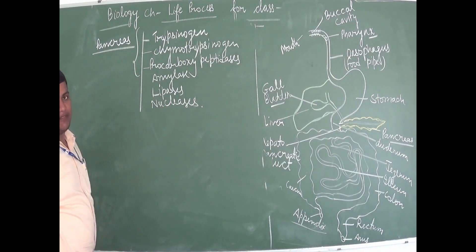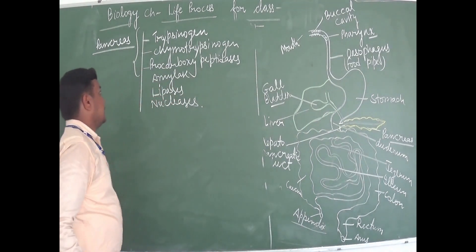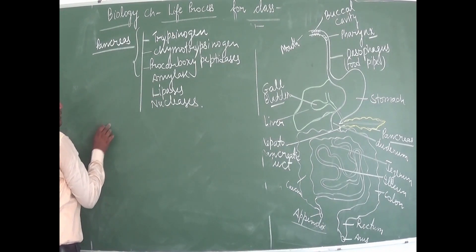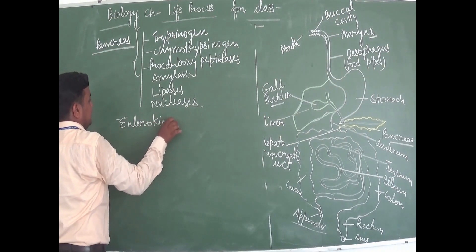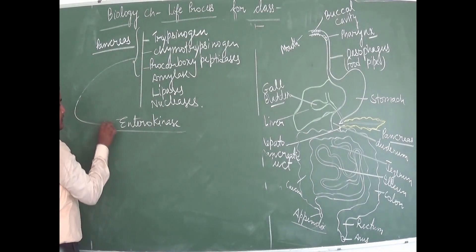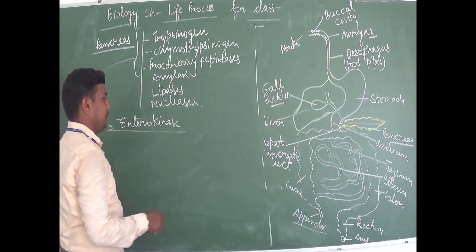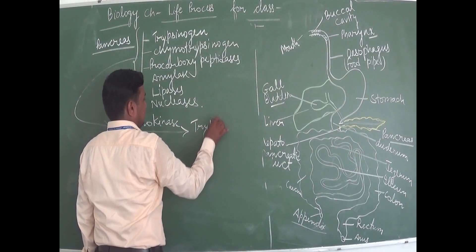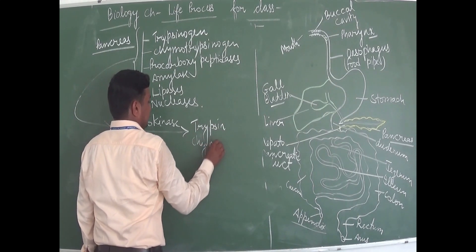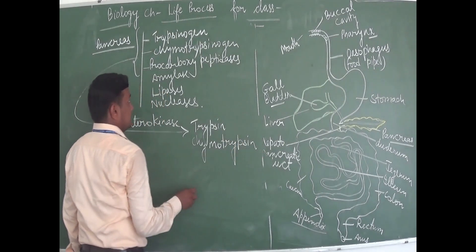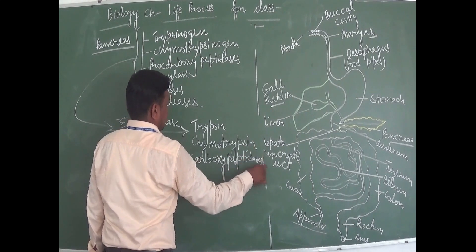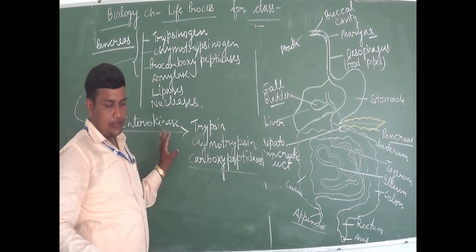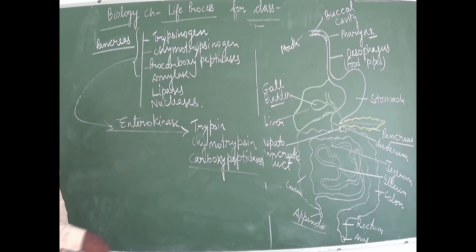There is one more enzyme released from the intestinal wall called enterokinase. Enterokinase converts all three inactive enzymes into their active forms: trypsin, chymotrypsin, and carboxy peptidases. These active enzymes then break down proteins. We saw that protein was broken into proteases and peptones in the stomach.